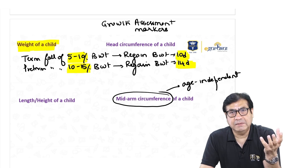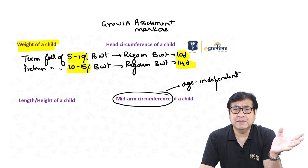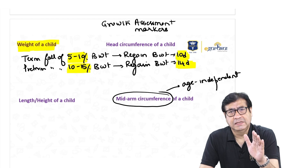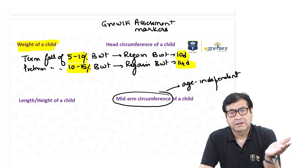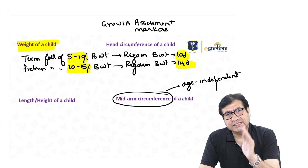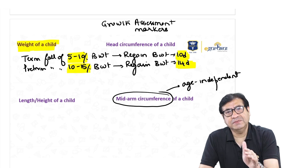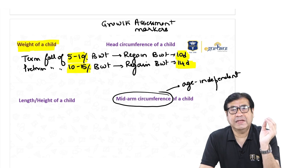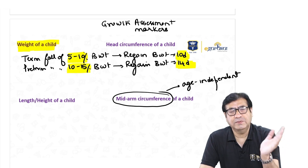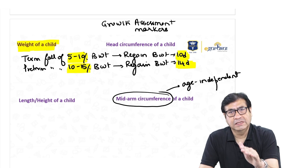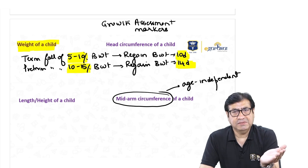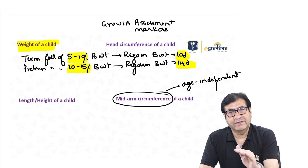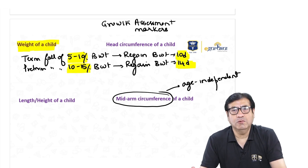The weight of the child becomes double the birth weight at 5 months, three times the birth weight at 1 year, four times at 2 years, five times at 3 years, six times at 5 years, seven times at 7 years, and ten times the birth weight at 10 years. This is how the weight of the child increases with age.